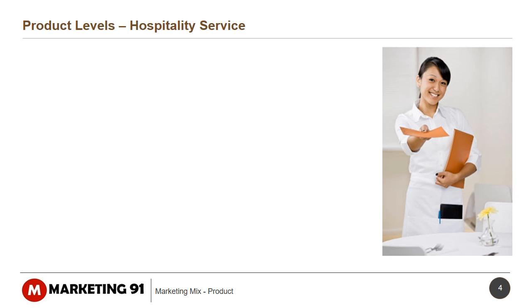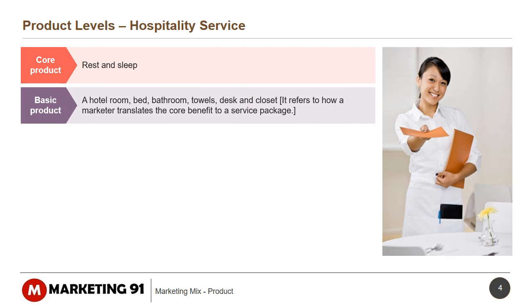Let's understand product levels through the example of a hotel. The Core Product is rest and sleep. The Basic Product is a hotel room, bed, bathroom, towels, desk and closet — it refers to how a marketer translates the core benefit into a service package.